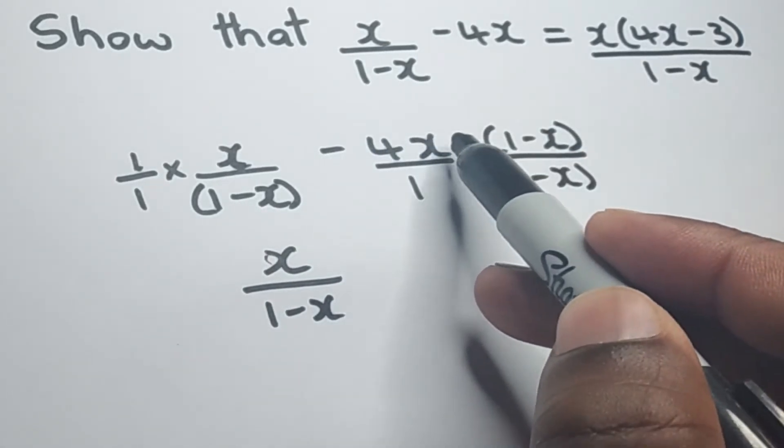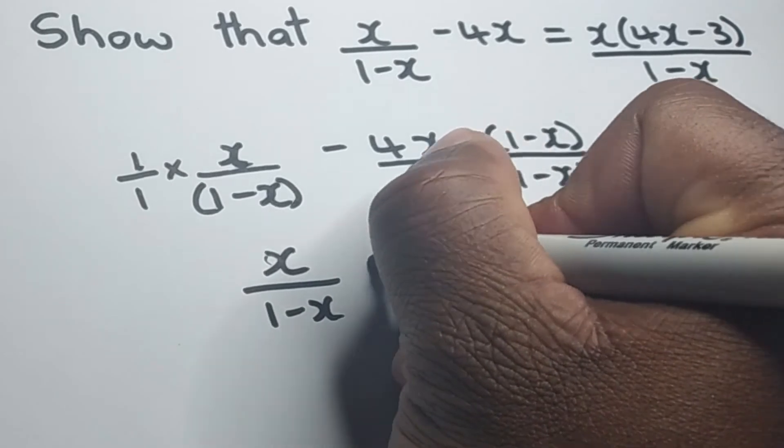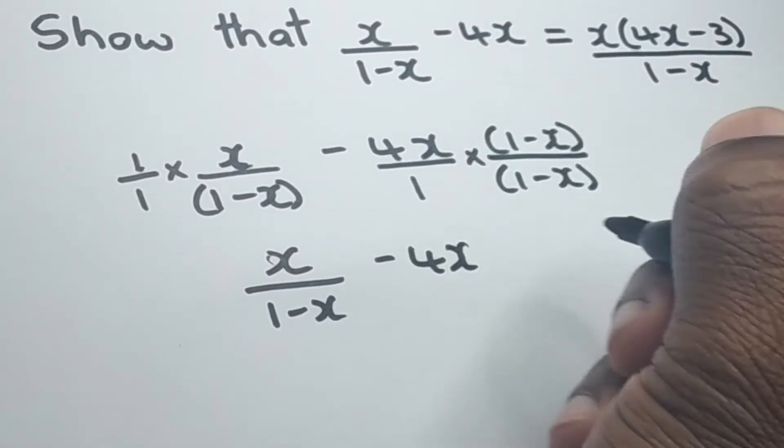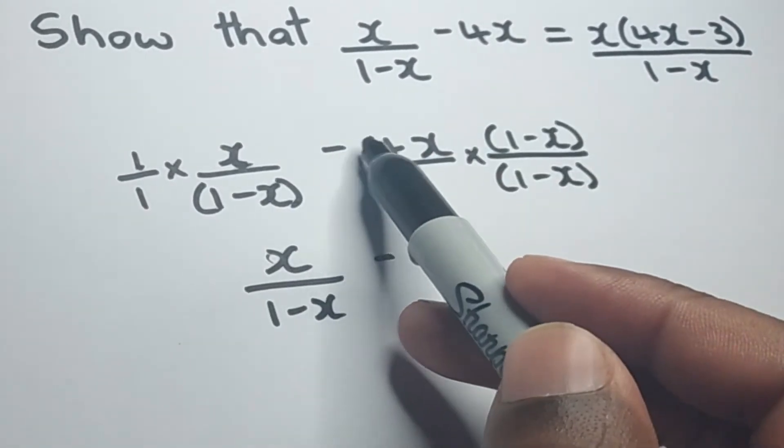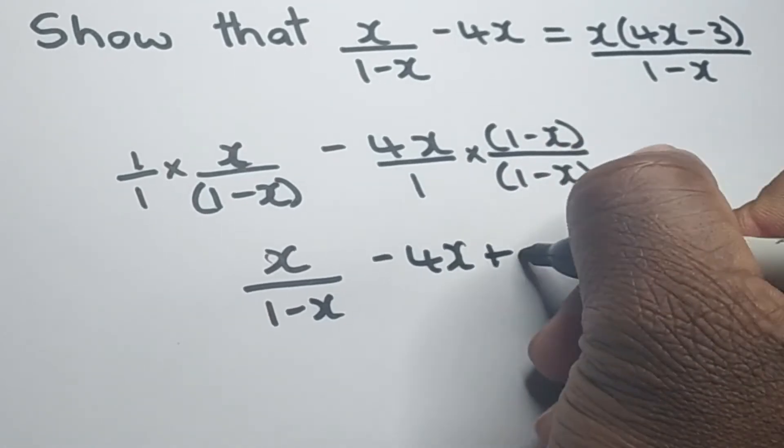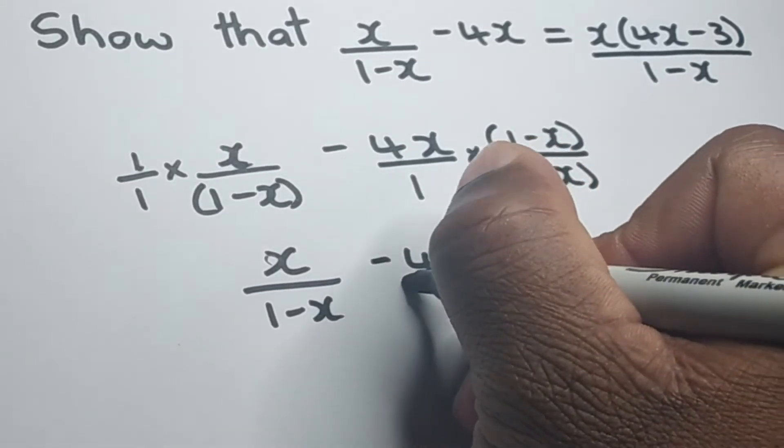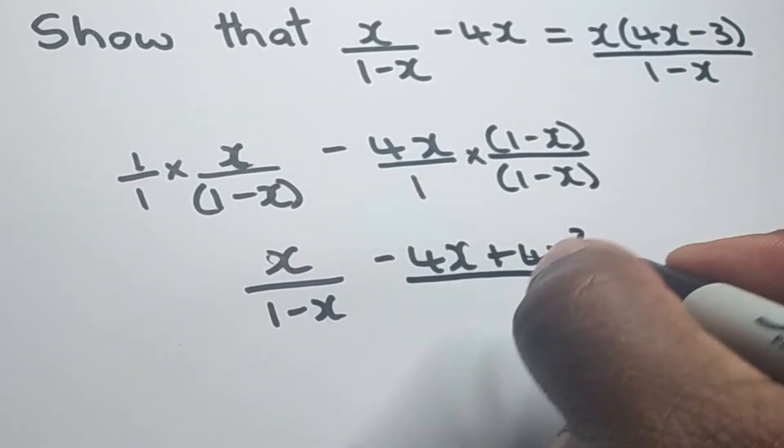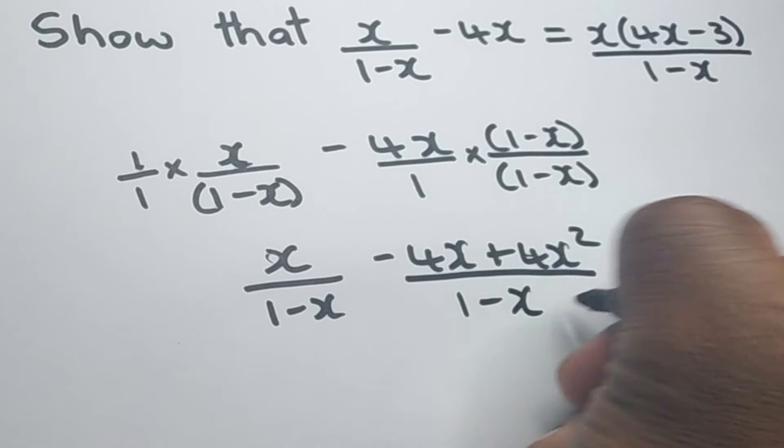So we'll end up with negative 4x times 1, which is negative 4x. Then we'll have negative 4x times negative x, which is positive 4x squared, all over 1-x.